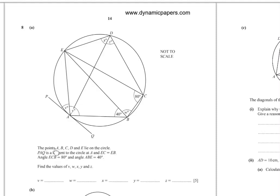Problem 8A. The points A, B, C, D, and E lie on the circle. P, Q is a tangent to the circle at A, and EC equals EB.